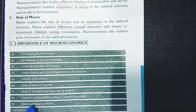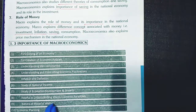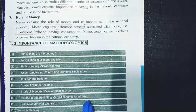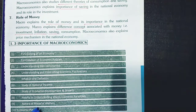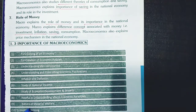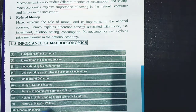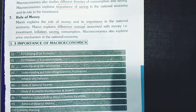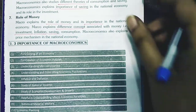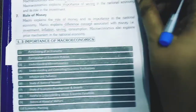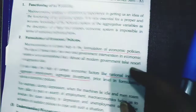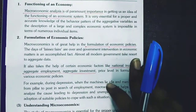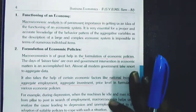The eighth point is helpful in understanding macroeconomic paradoxes; ninth is nature of material welfare; tenth is economic planning. Now we are going to discuss these in detail.